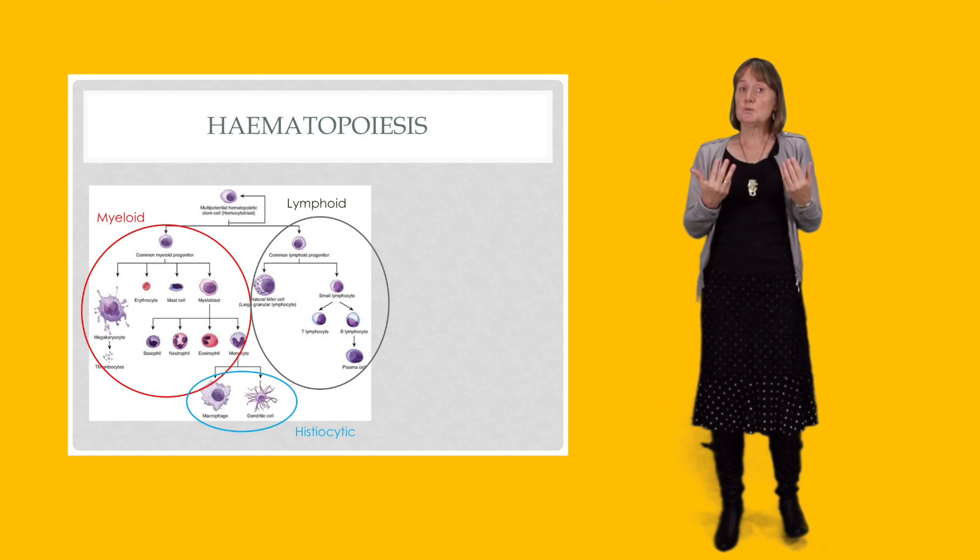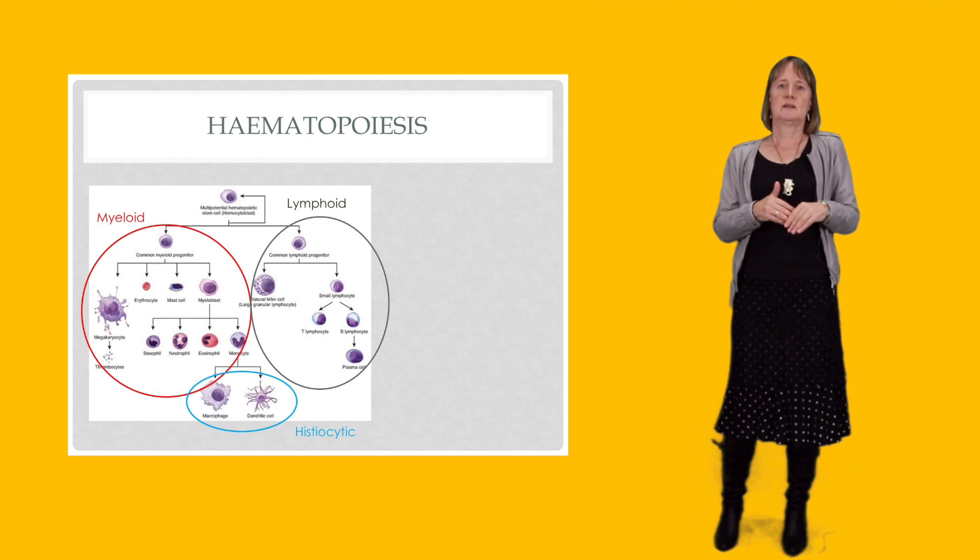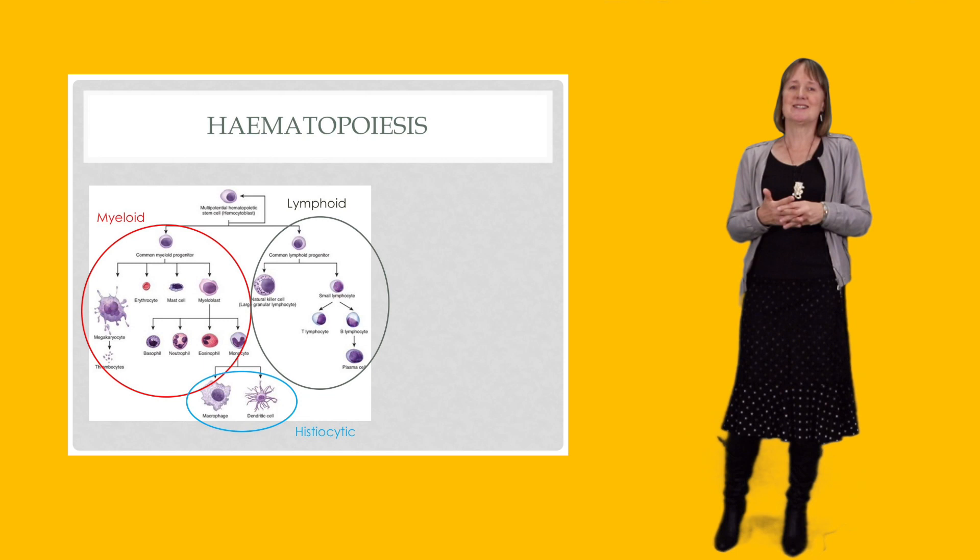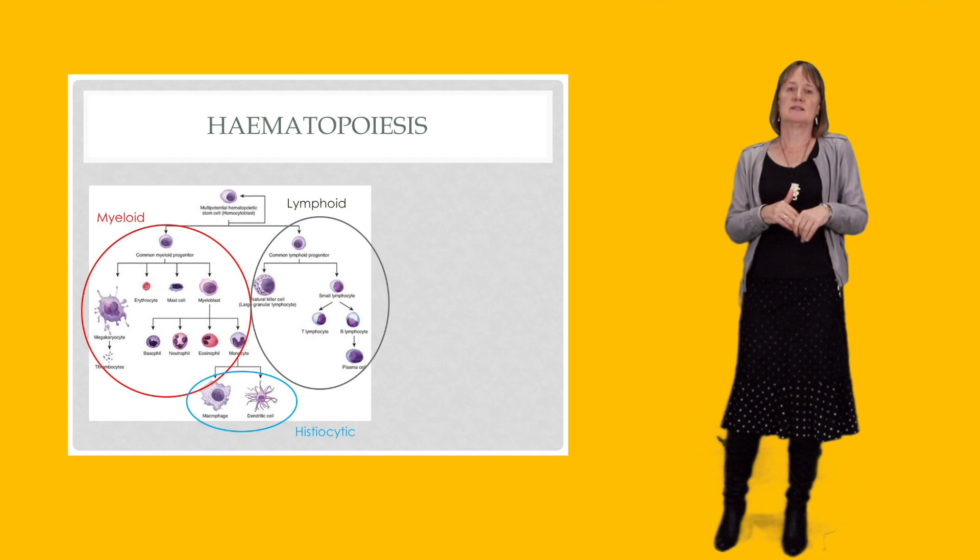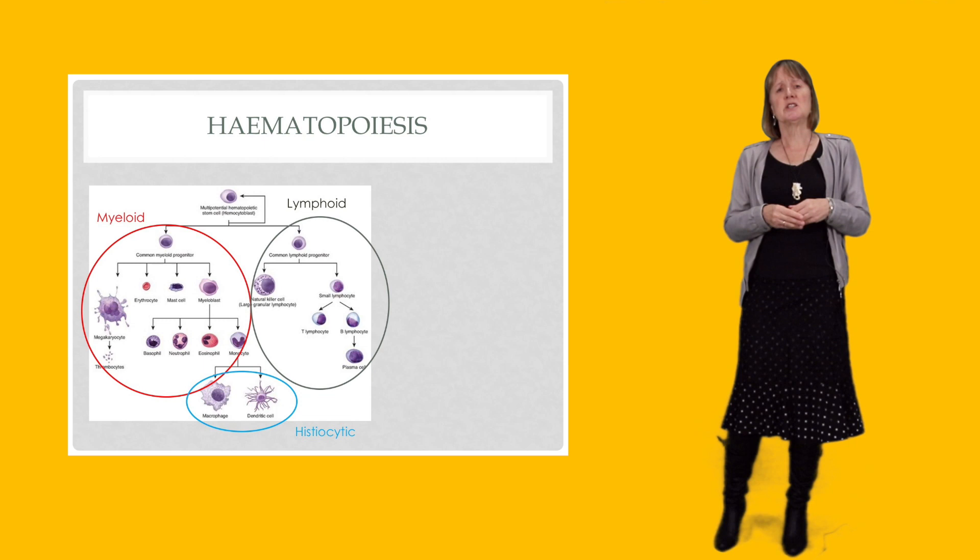So when we come to look at the hematological malignancies, we can correlate them with their normal counterpart. So we have a group of malignancies that we refer to as myeloid lineage malignancies, and they arise from an abnormal myeloid progenitor cell. Then we have the lymphoid malignancies arising from the abnormal lymphoid progenitor cell.